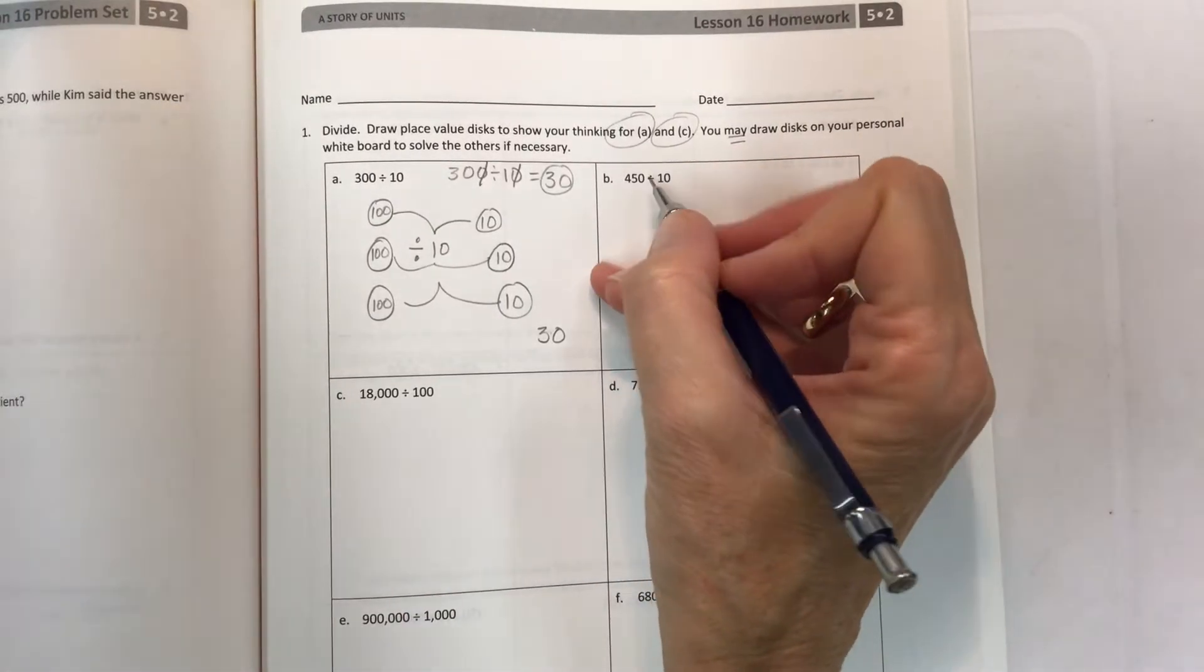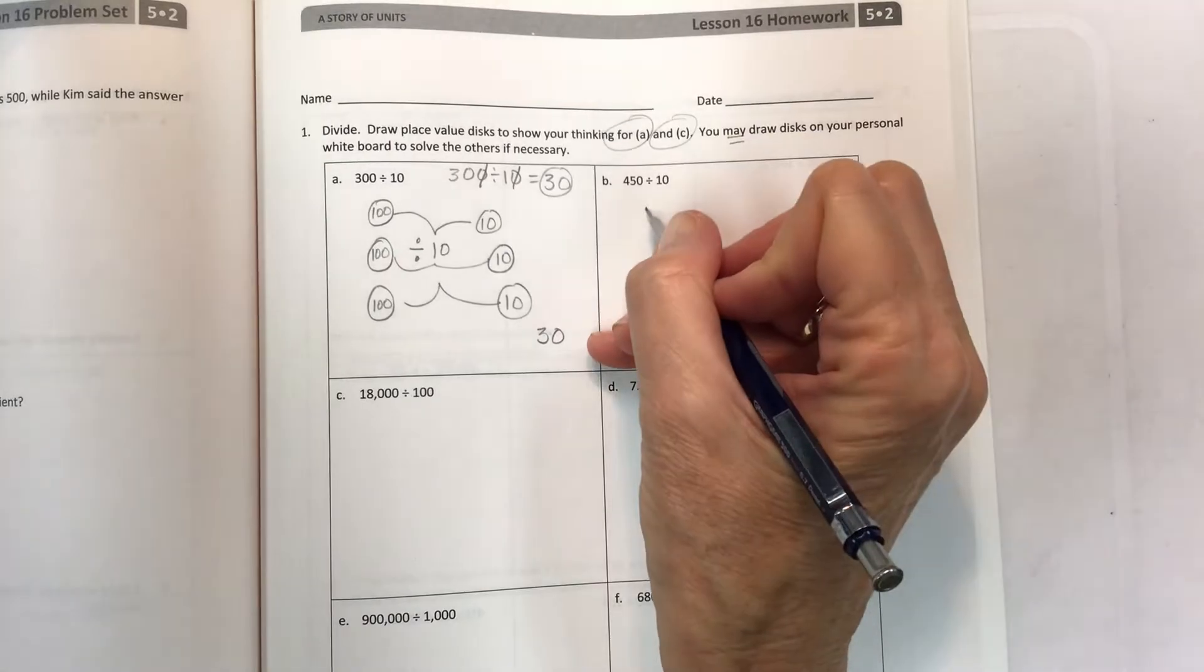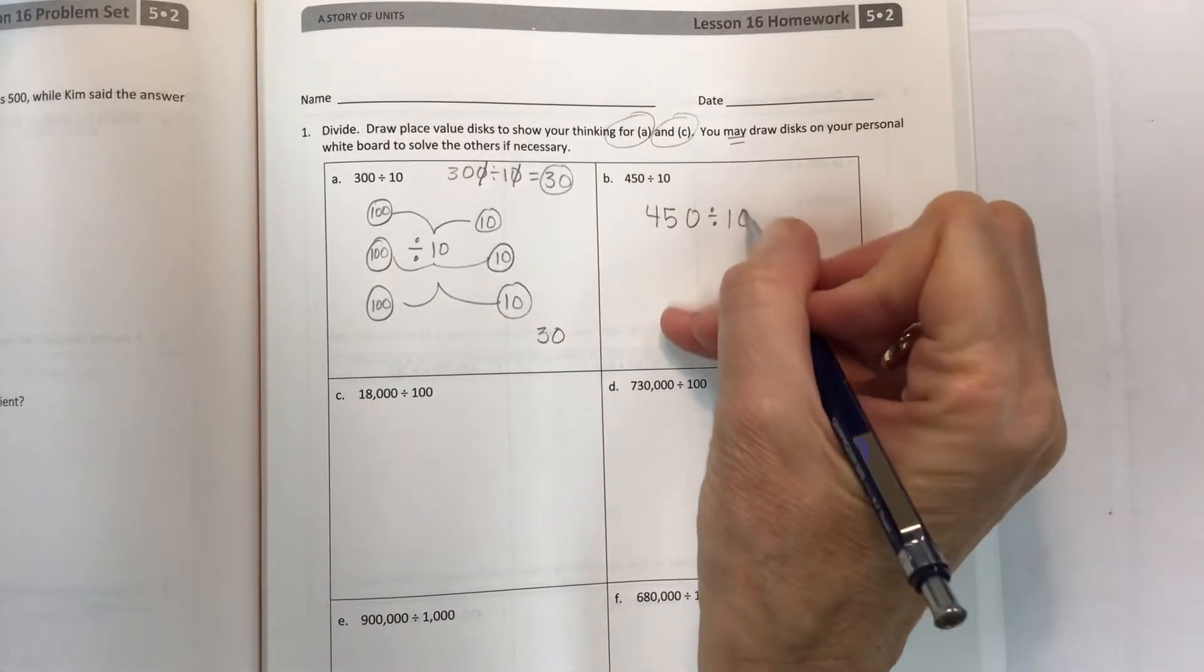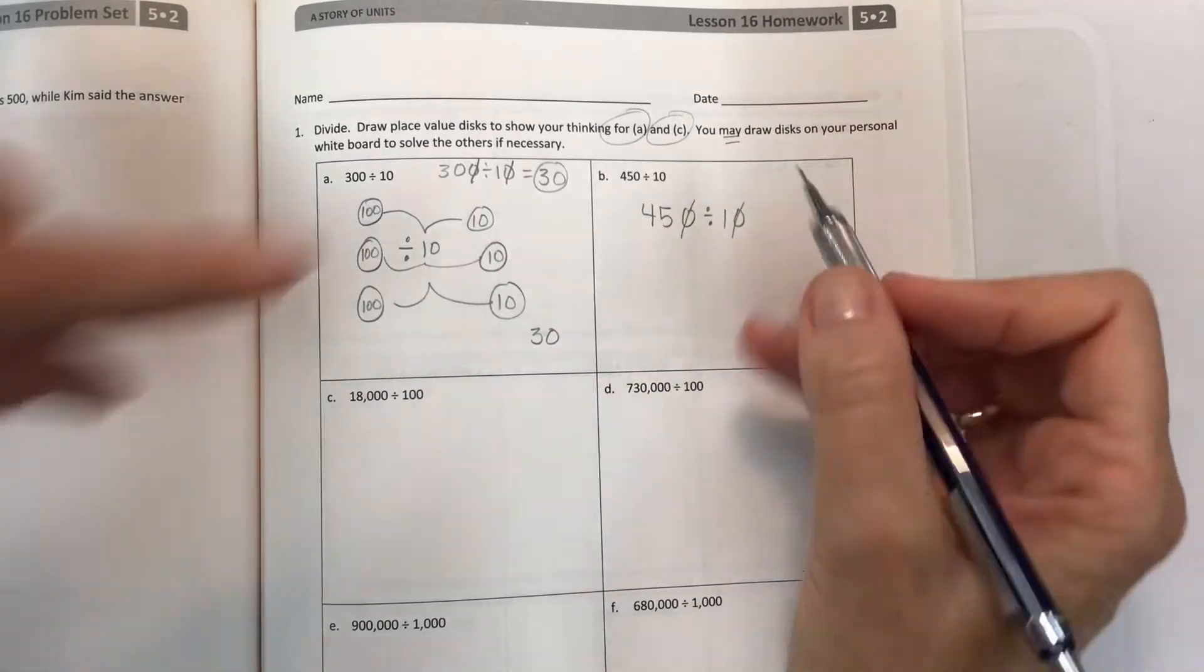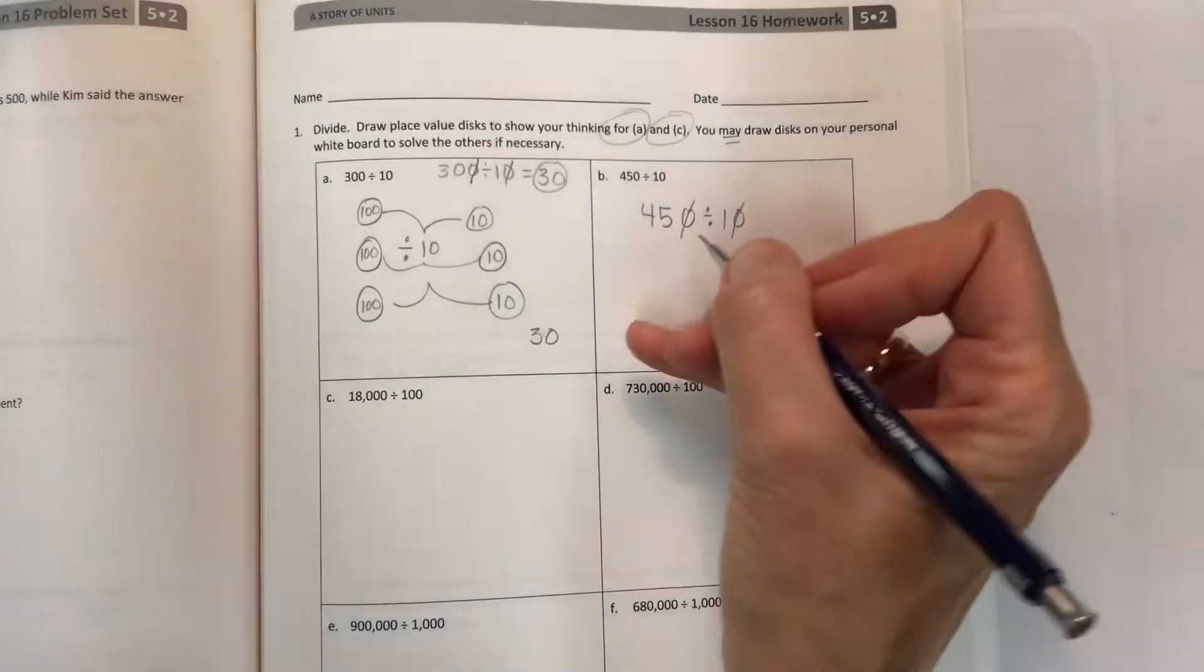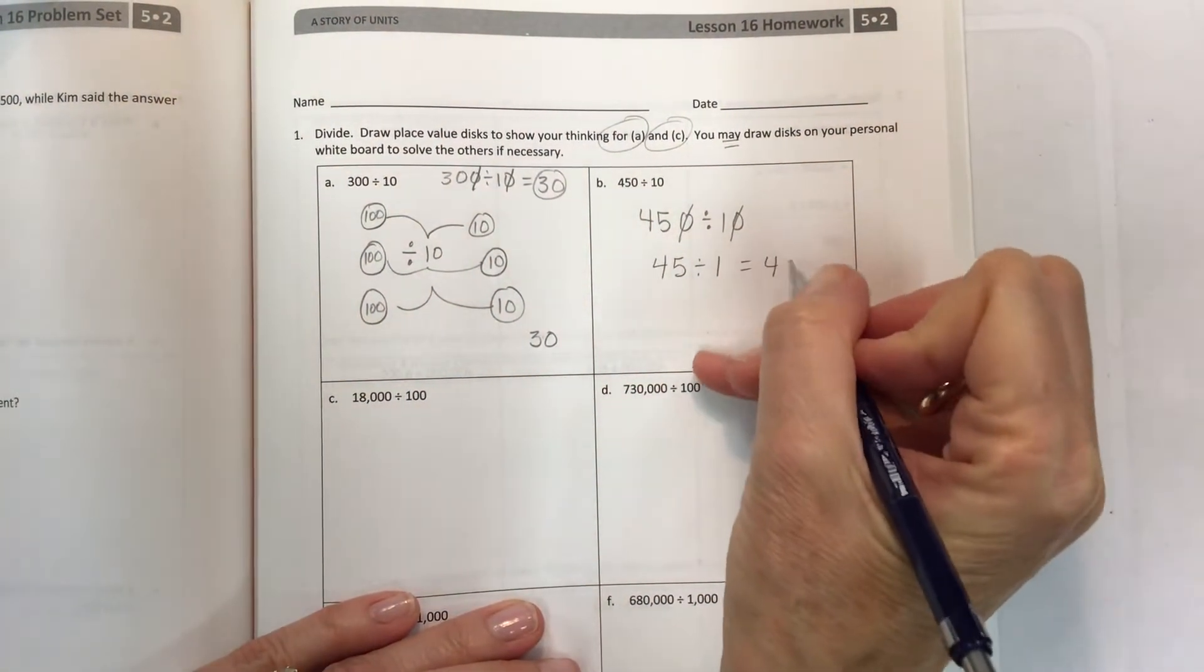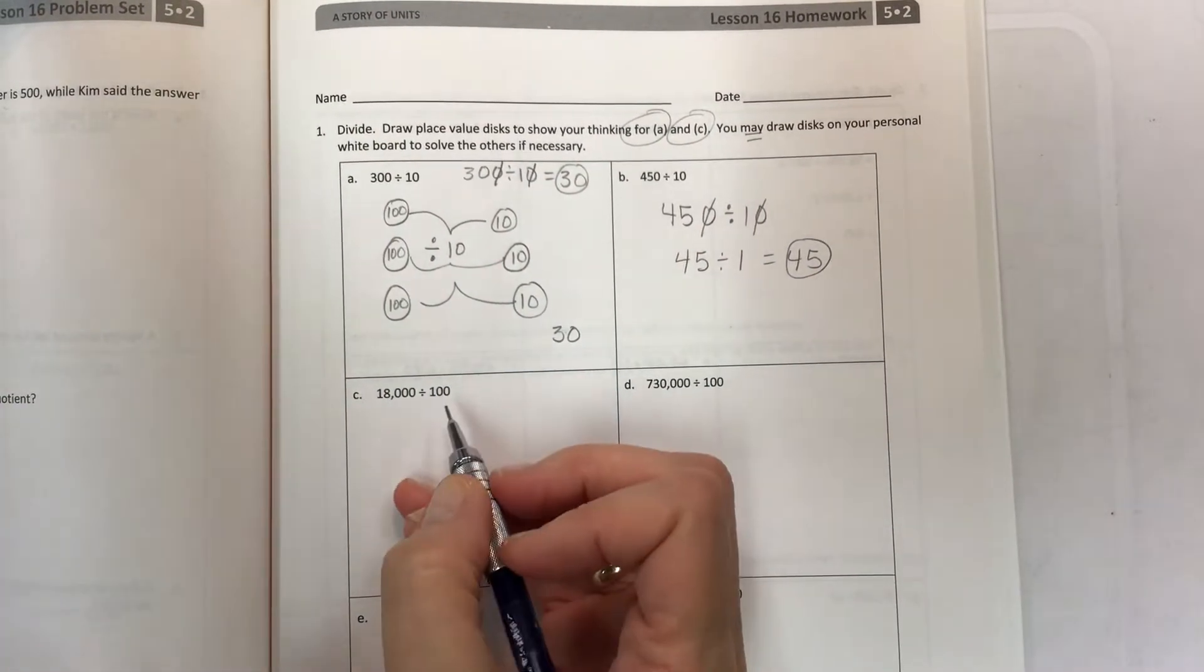For B we don't have to make the discs, so you would just take your 450, rewrite it so you can slash out. We have matching or offsetting zeros, one on each problem. So then that leaves you with 45 divided by 1, which is 45. Super easy start to today's lesson.